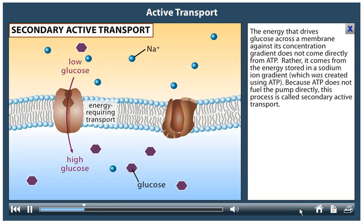The energy that drives glucose across a membrane against its concentration gradient does not come directly from ATP. Rather, it comes from the energy stored in a sodium ion gradient, which was created using ATP.